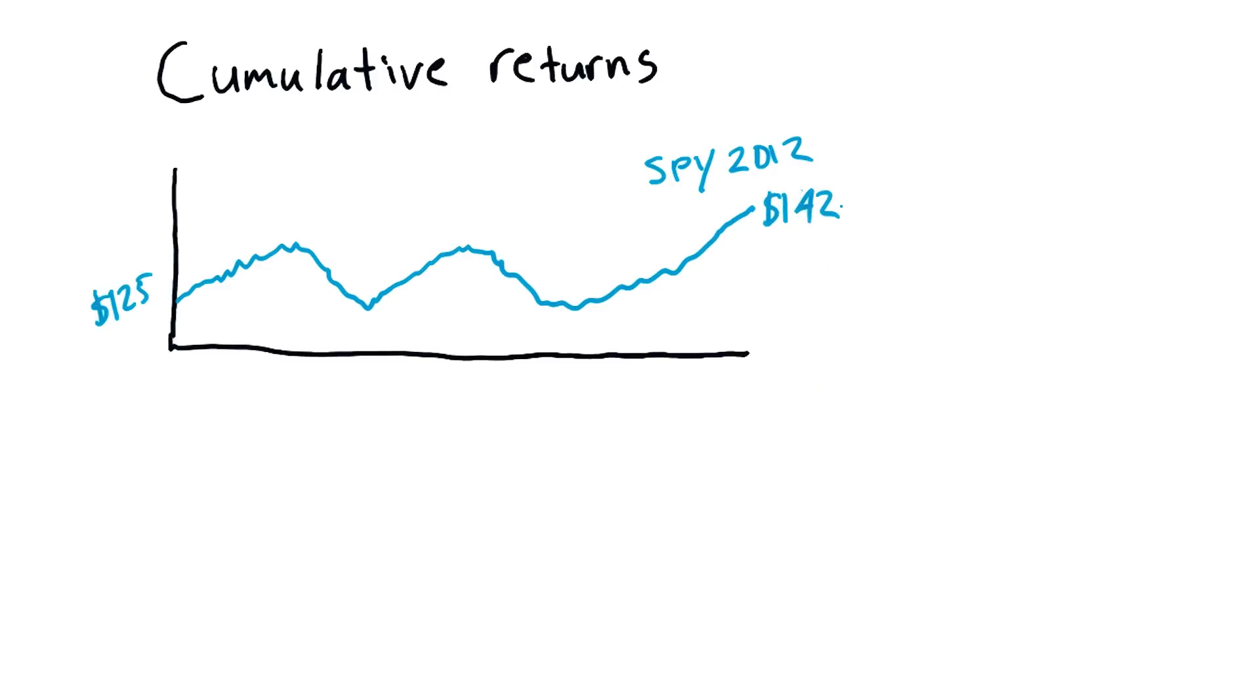When you listen to the news, you hear things like for the year 2012, S&P 500 gained 13.6%. That is cumulative return. You don't hear them say over 2012, S&P 500 went from 125 to 142.